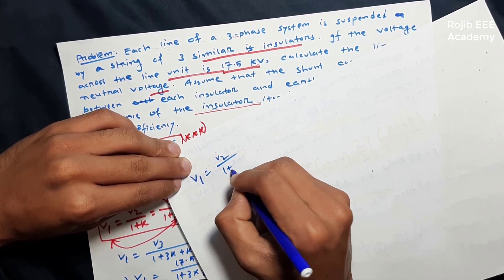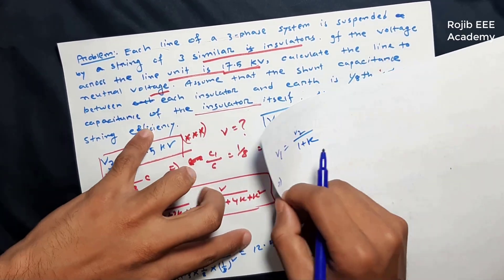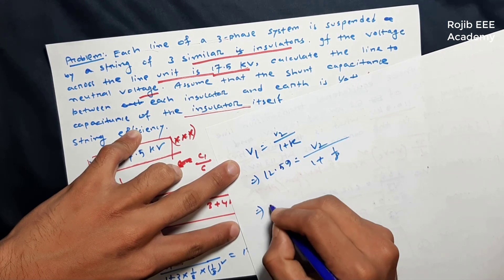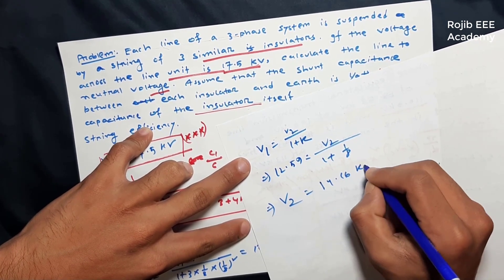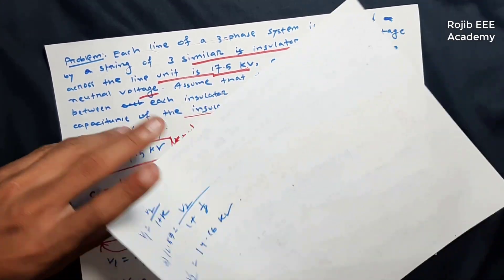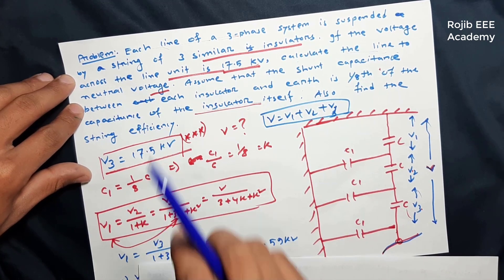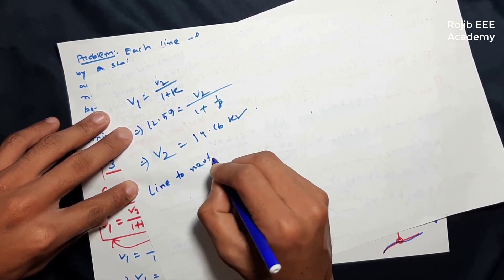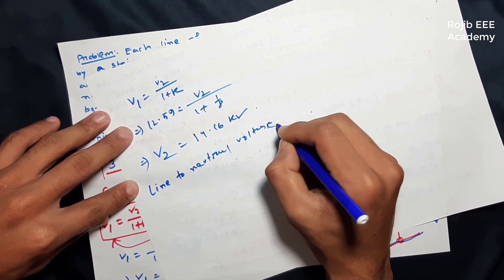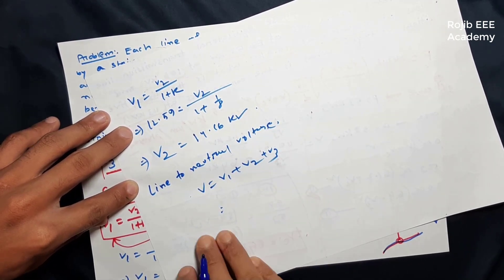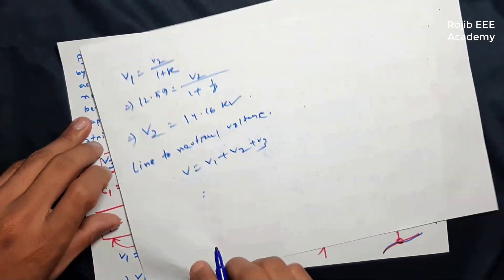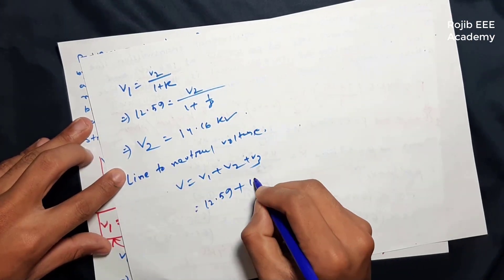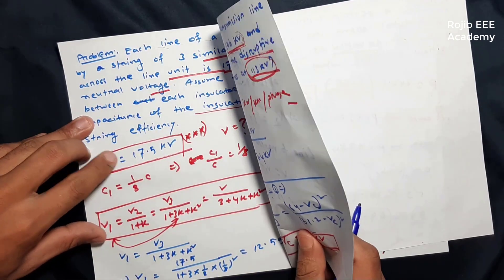V1 equals V2 divided by (1 + K), and V2 divided by (1 + K²). The line-to-neutral voltage V equals V1 plus V2 plus V3. With K = 1/8: V1 is approximately 12.59 units, V2 is 1 unit, and V3 is approximately 1.59 units.